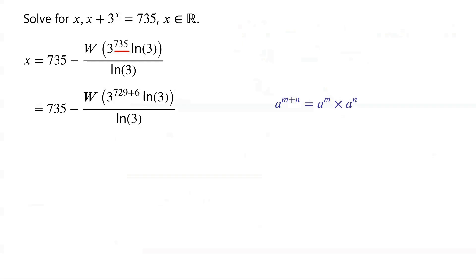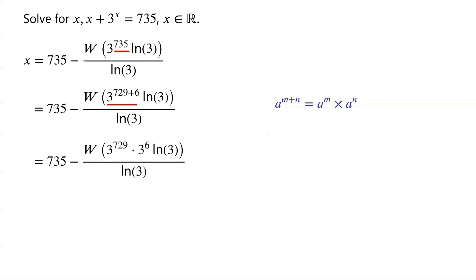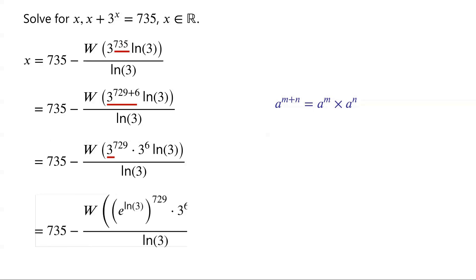By applying this, 3 to the power of 729 plus 6 is equal to 3 to the power of 729 times 3 to the power of 6. 3 can be written as e to the power of ln(3).